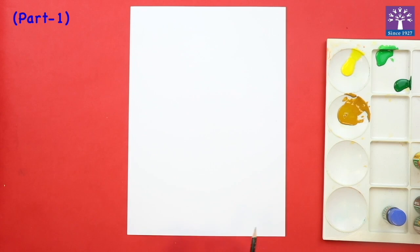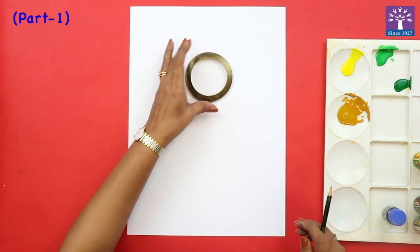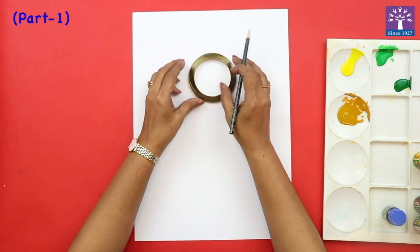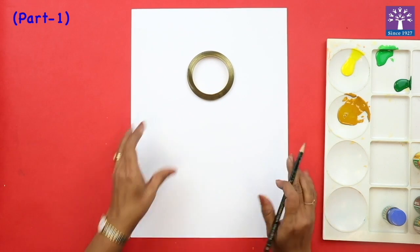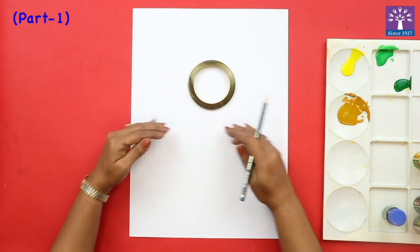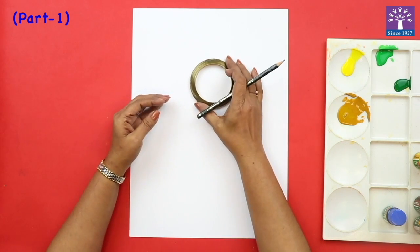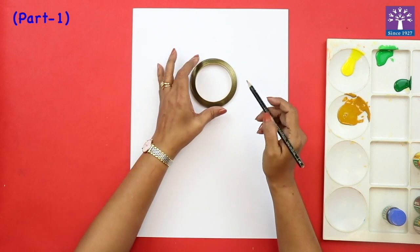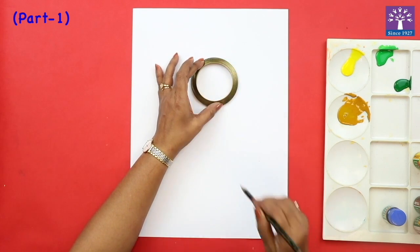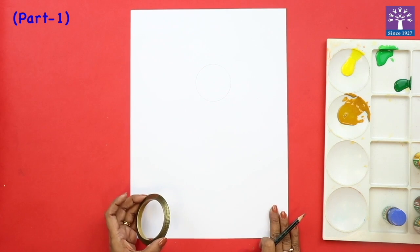So let's begin. On your drawing sheet, draw a circle. If you want, you can draw a freehand circle or you can use any circular object to trace a circle slightly above. This is the half of the page or the center of the page. We will trace the circle or draw a circle slightly above the center of the page.